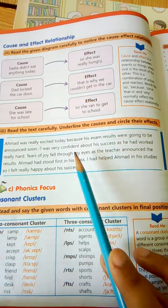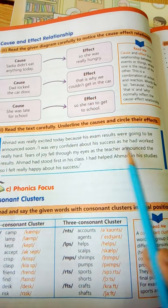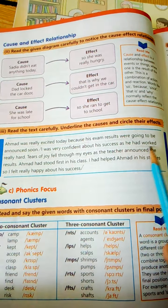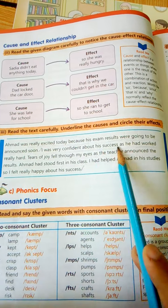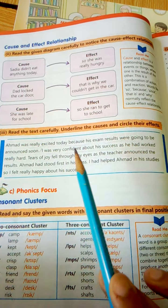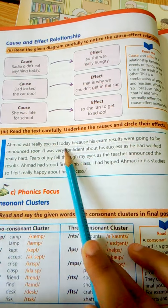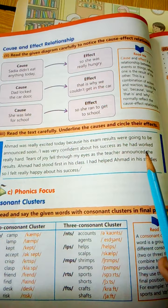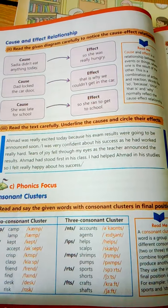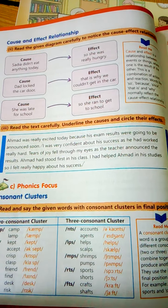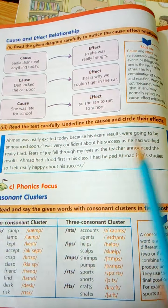اس میں cause کیا ہوگا اور effect کیا ہوگا: working hard is the cause and success will be the effect. ٹھیک ہے — کیونکہ effect success ہوگا اور cause working hard ہوگا۔ It's your today's work and you have to solve this by your own — just one sentence is left.